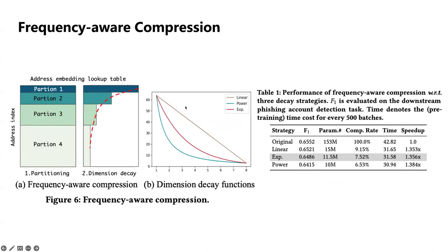For different decay functions, we can get different compression rates and performance on the downstream account detection task. As we can observe, this technique can compress the entire model to 8% with only a few performance drops, and also speed up the training because of the reduced gradient calculation.